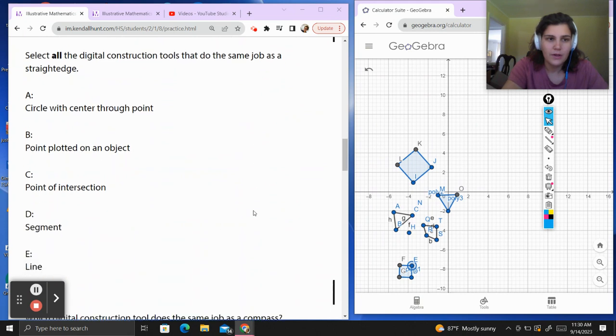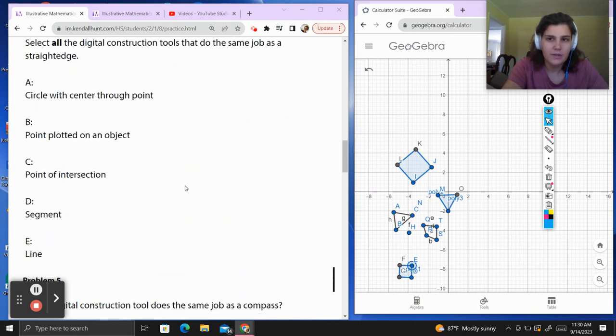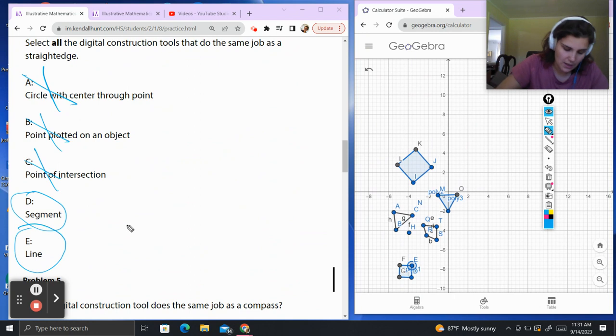Problem 4. Select all of the digital construction tools that do the same job as a straight edge. Circle with center through a point: No, a straight edge draws lines, not circles. Point at an object: Also not a line. Point of intersection: Also not a line. Segment: Yep, that's a line. And a line: Yep, we use that to draw. A segment has a starting and an end point, and a line segment goes on forever. But we use a straight edge to draw both of those in our geometry constructions.